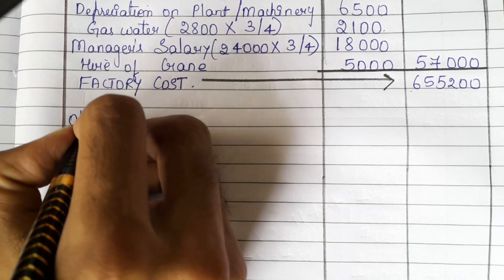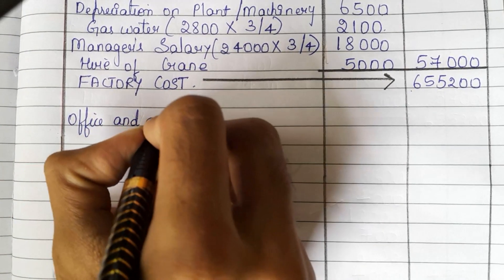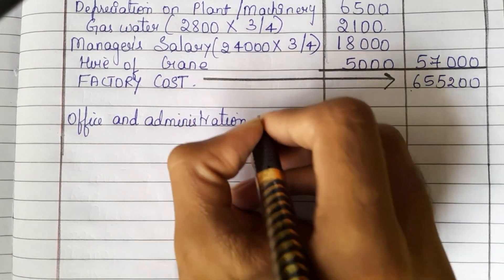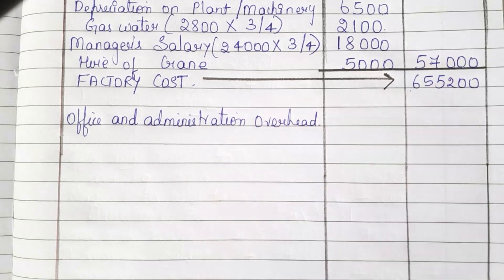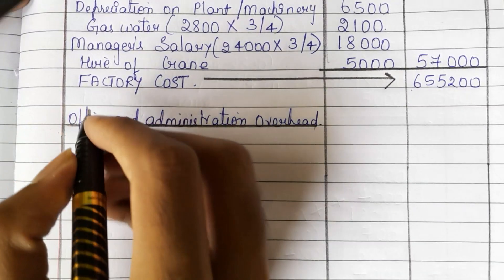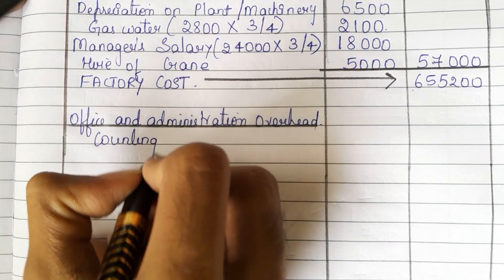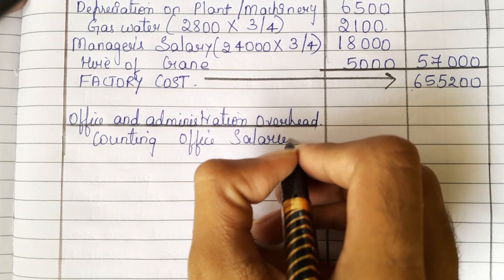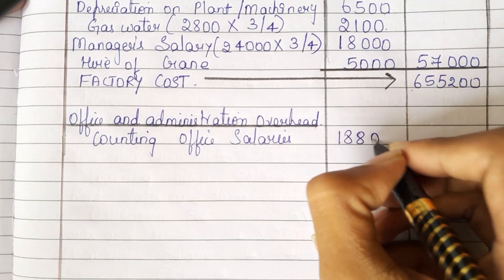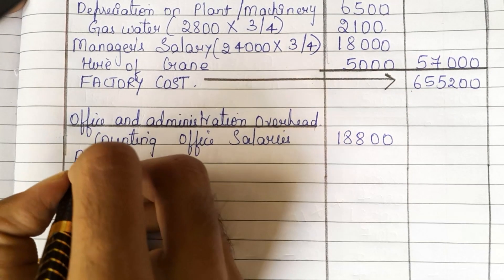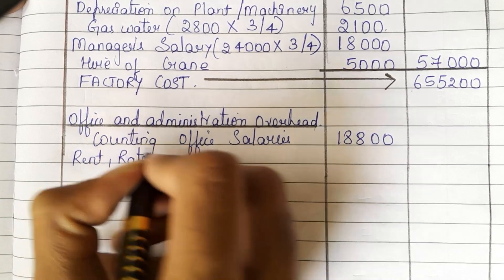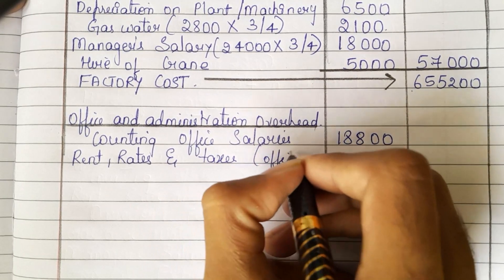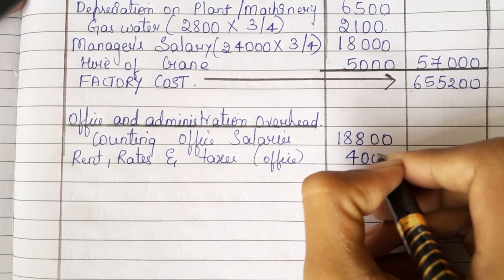We need to add office and administration overheads. First, we are having counting office salaries: 18,800. Then we are having rent, rates, and taxes related to office: 4,000.